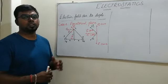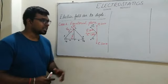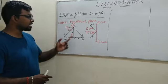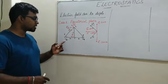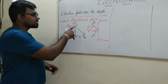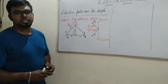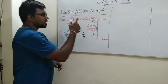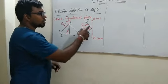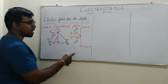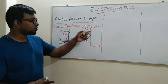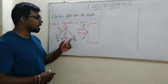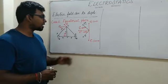Case 2: electric field due to a dipole on the equatorial plane. Consider a point C at a distance r from the center of the electric dipole, such that point C is equidistant from both charges minus q and plus q. The electric field at C is resolved into two components: the perpendicular components E-plus·sinθ and E-minus·sinθ act in opposite directions and cancel each other, while the parallel components E-plus·cosθ and E-minus·cosθ act in the same direction and add up.